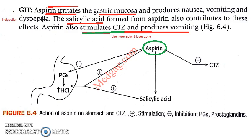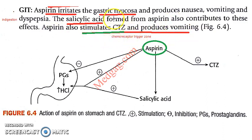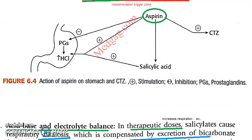Furthermore, acetylsalicylic acid is an acid, so it is going to irritate the gastric mucosa even further. One more thing to note here is that aspirin stimulates the chemoreceptor trigger zone in the brain, which also causes nausea and vomiting.